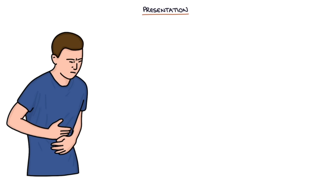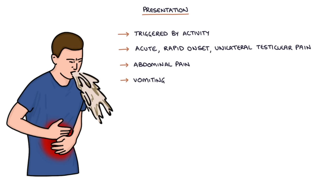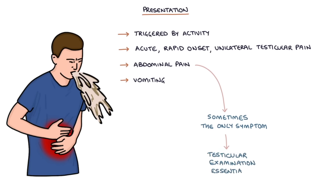Testicular torsion is often triggered by some sort of activity such as playing sports. Ask what the patient was doing at the time when the pain started, as you may be able to identify a trigger. It presents with an acute rapid onset of unilateral testicular pain. There may be associated abdominal pain and vomiting. Sometimes abdominal pain is the only symptom in boys, and testicular examination to exclude torsion is essential.